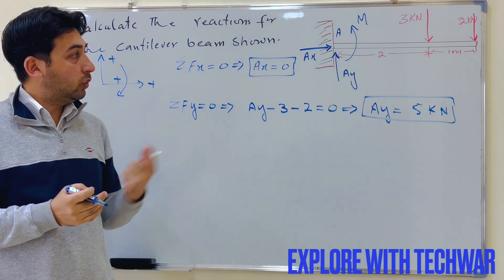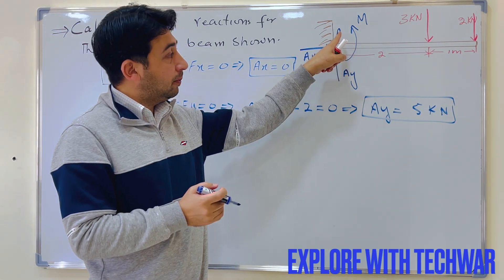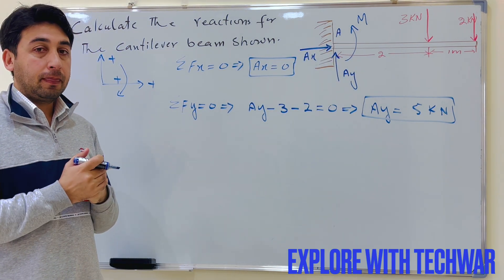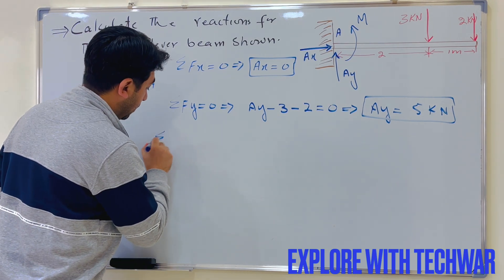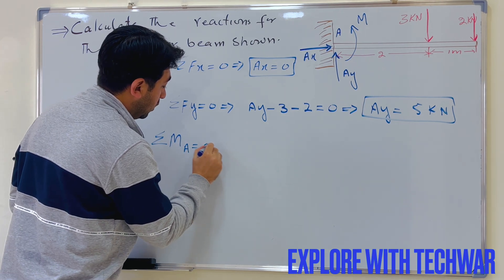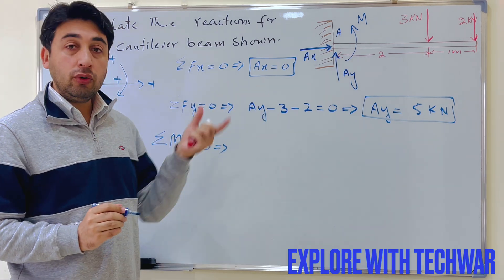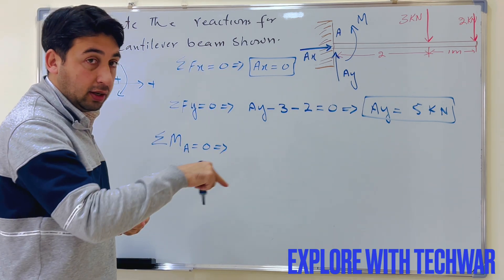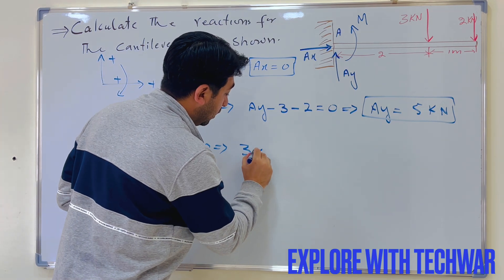AY is the second reaction found. Now to find the moment at point A, we take the sum of moments about point A equal to zero. The three kilo Newton force produces a clockwise moment, which is positive by our sign convention — three times its distance of two meters.